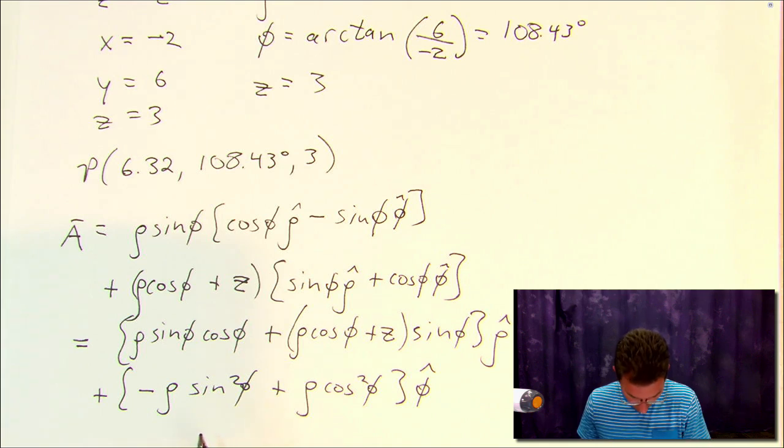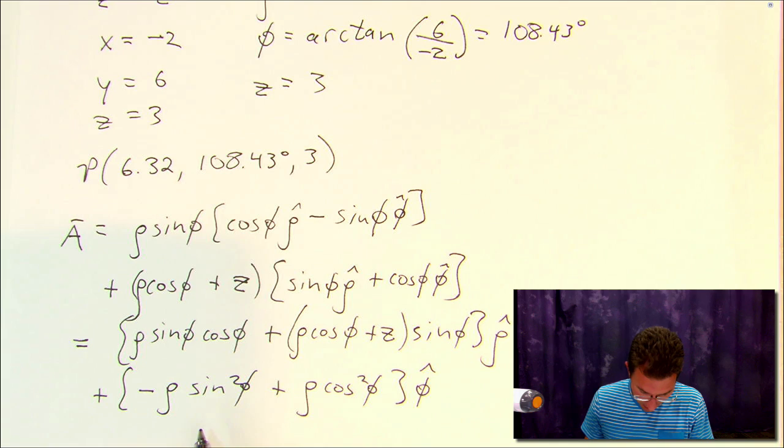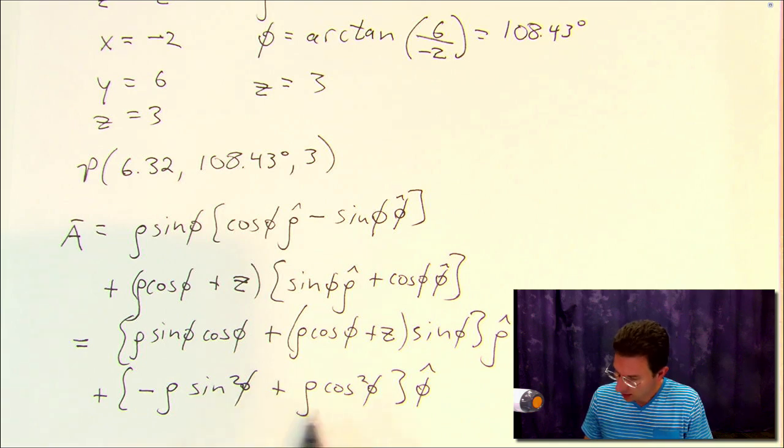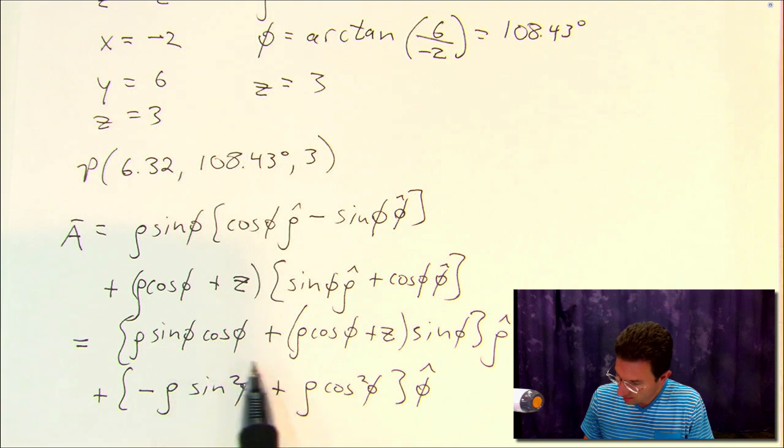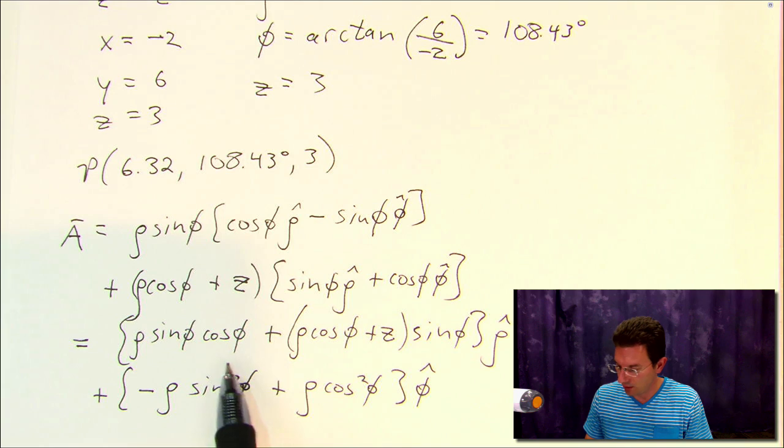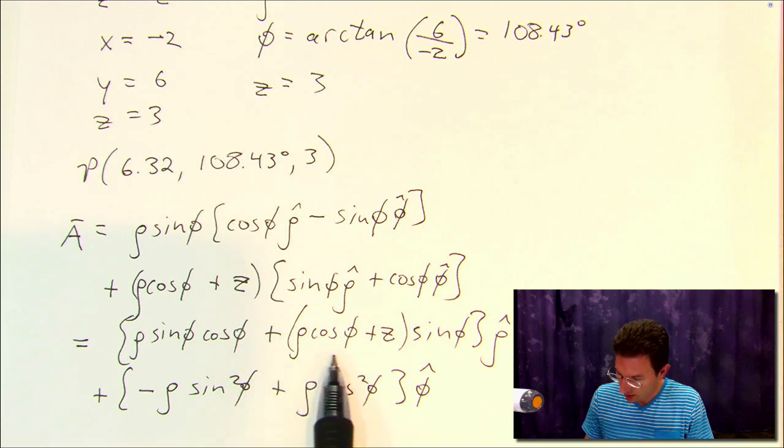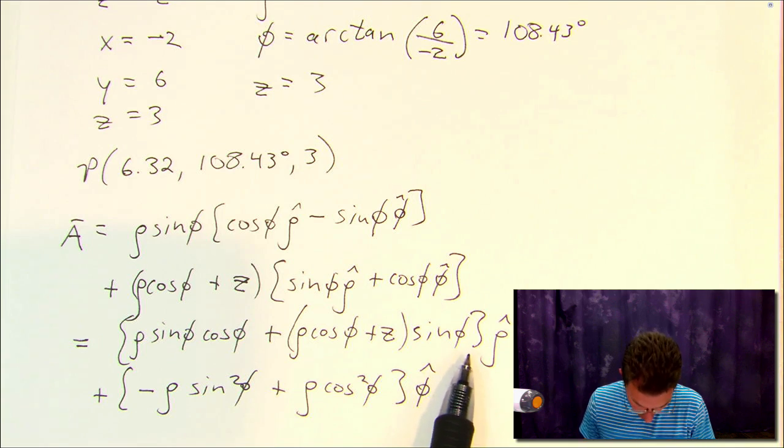And what you end up with is an expression that looks like the following here. You've got ρ sin φ cos φ plus (ρ cos φ + z) all times sin φ. That's in the ρ̂ direction.